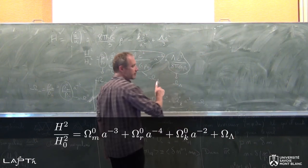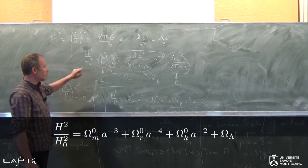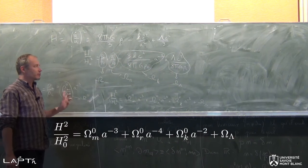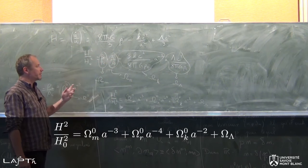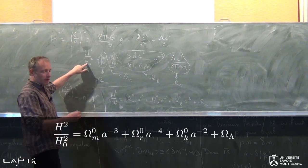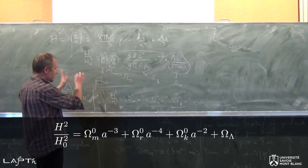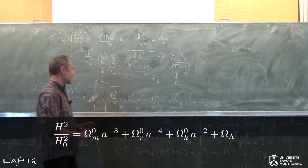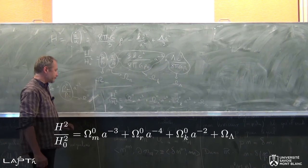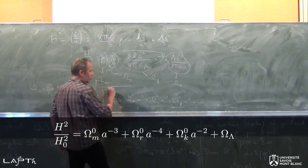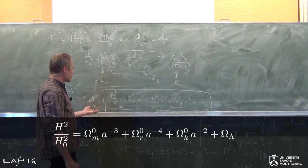Attention, ρ_C tel que je l'ai défini, c'est une constante, reliée à la valeur actuelle de la constante de Hubble H₀. Dans certaines circonstances, on peut avoir besoin de s'intéresser à une densité critique définie avec la valeur de H à un autre moment que maintenant — mais ce n'est pas ce que je fais ici. La raison pour laquelle cette forme est plus intéressante et plus simple à manipuler, c'est qu'il n'y a que des grandeurs sans dimension là-dedans, et ça fait apparaître clairement la composition actuelle de l'univers : matière, rayonnement, courbure et constante cosmologique.